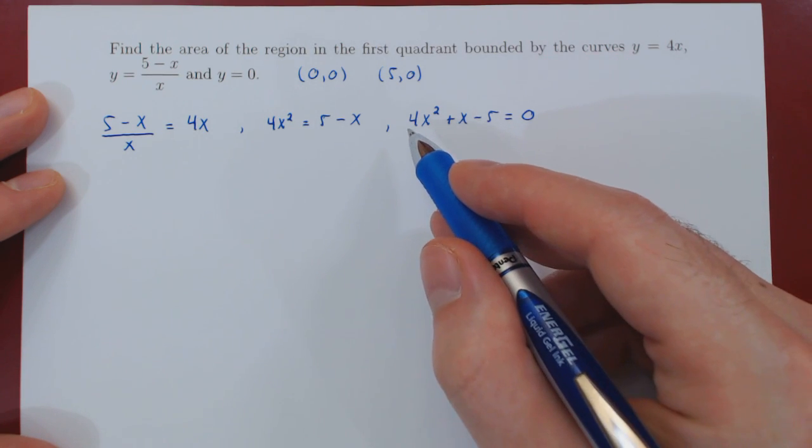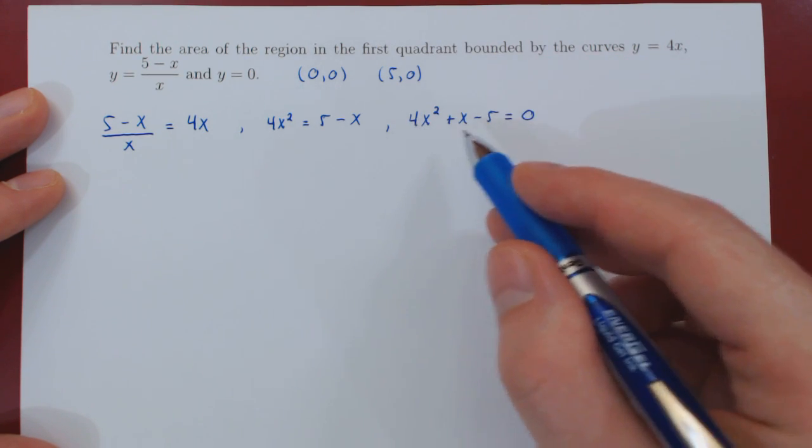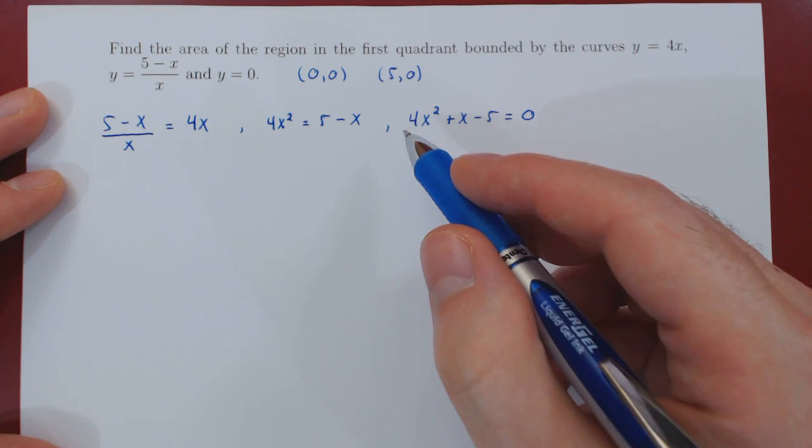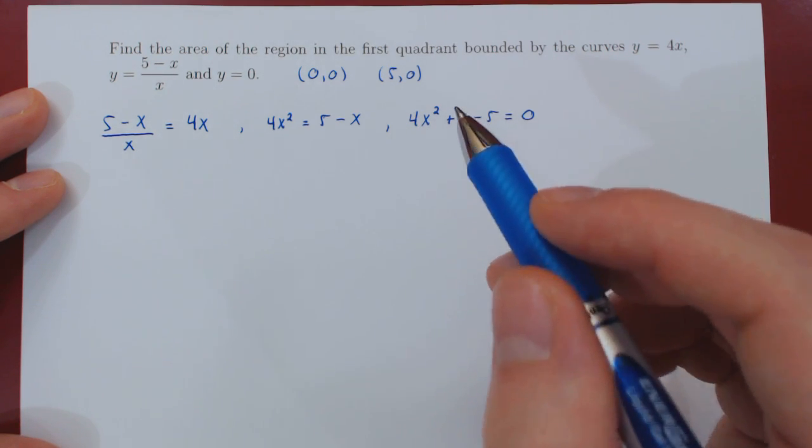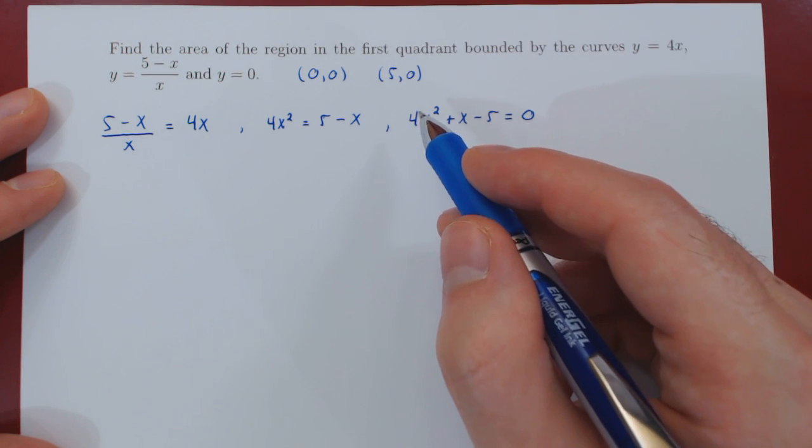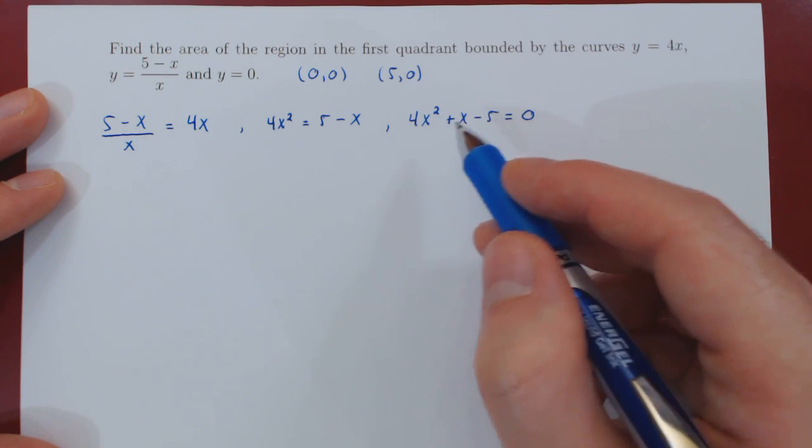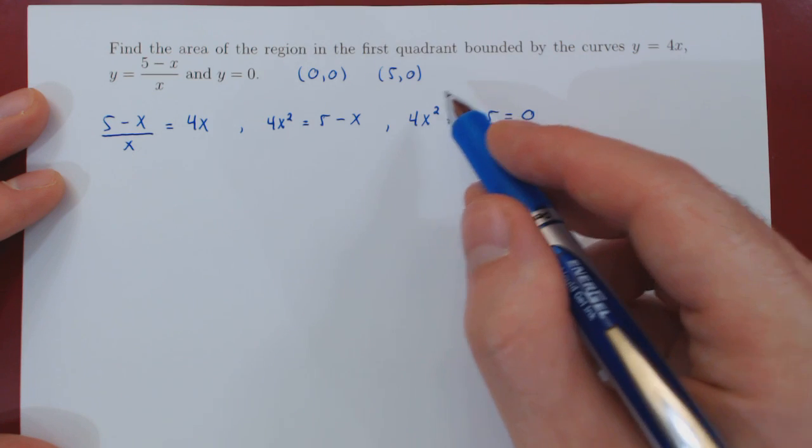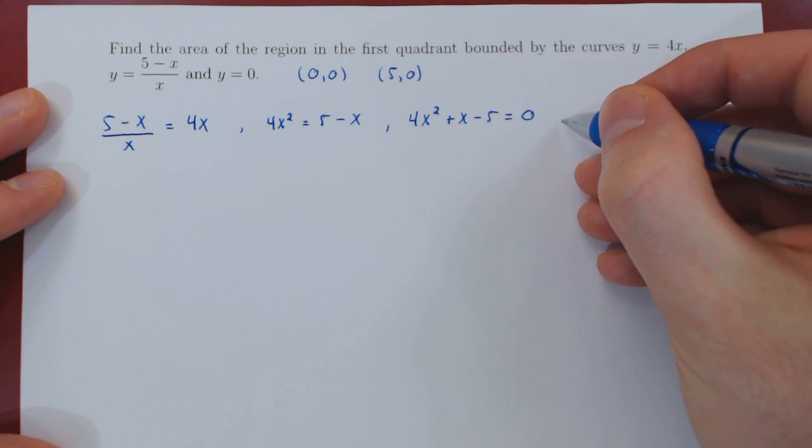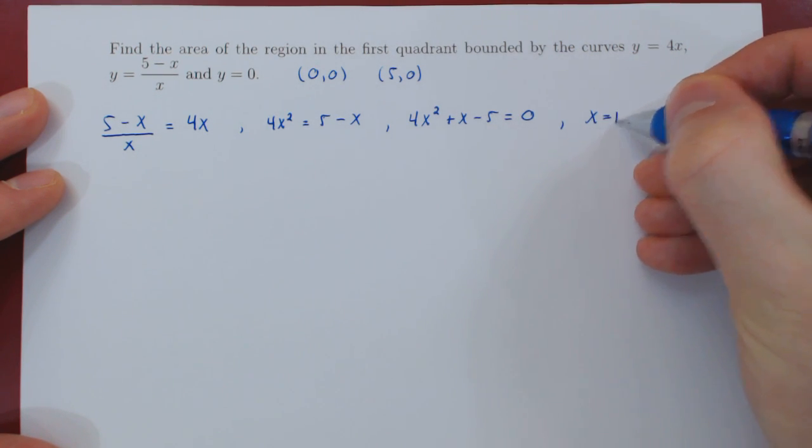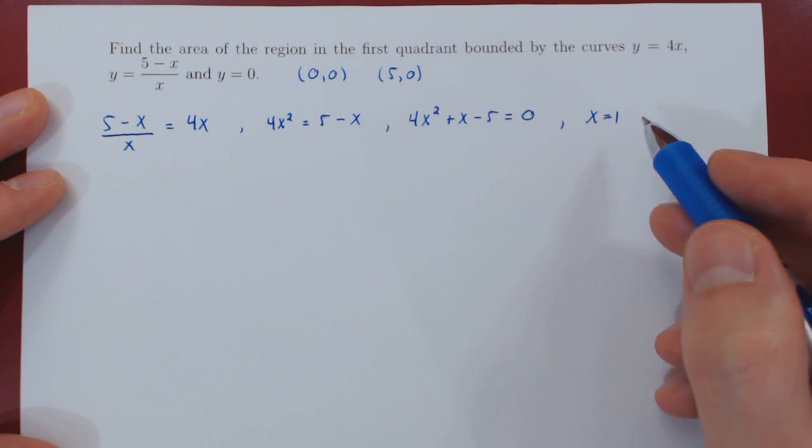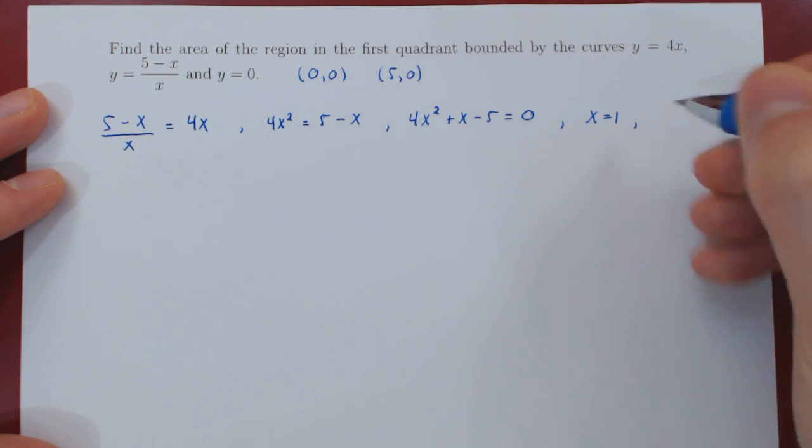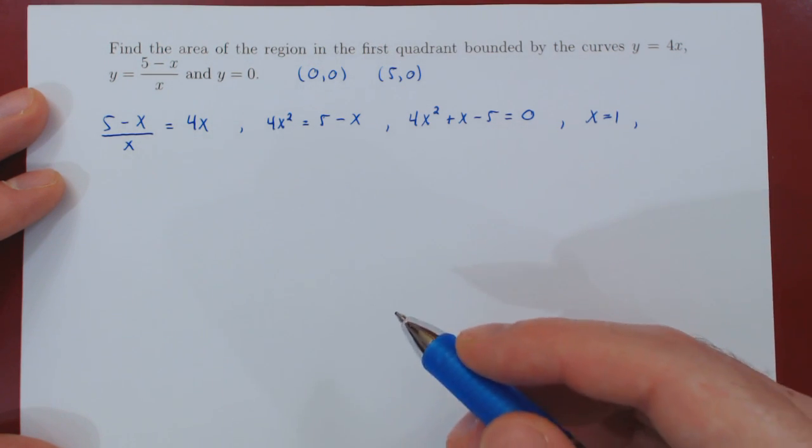We're looking for the solutions of this polynomial being equal to 0. We can factor here either by inspection or with the quadratic formula, but if you look at the coefficients 4, 1, and 5, there is an obvious solution being x equals 1. If you replace x by 1, you get 4 plus 1, 5 minus 5 is 0. This is clearly a solution.